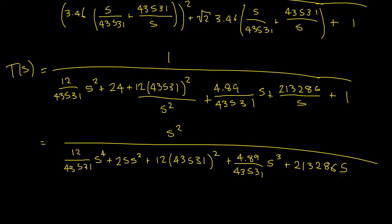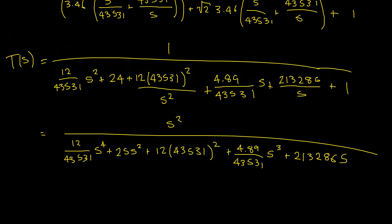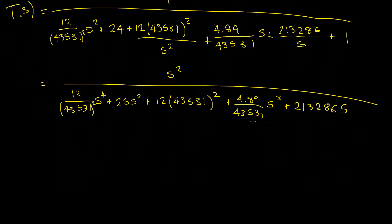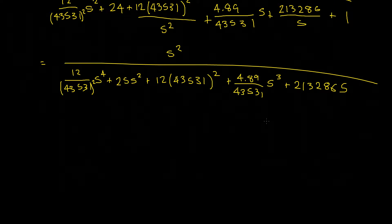Okay, so now there's only really one step left to do. And that's to divide through by 12 divided by 43,531. Sorry guys, just realize this should be squared here and it should also be squared there. Okay, so let's continue. Now, we'll divide through by 12 divided by 43,531 squared and then that will give us our final answer.